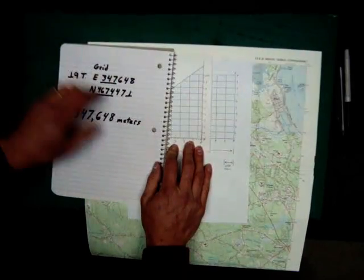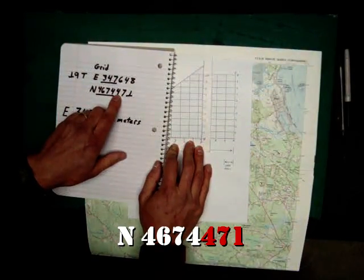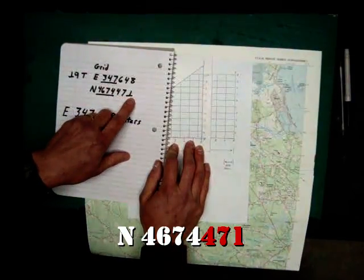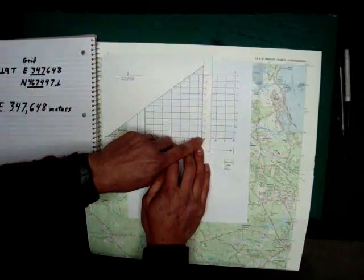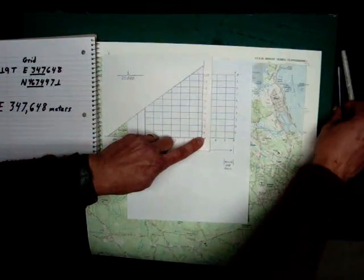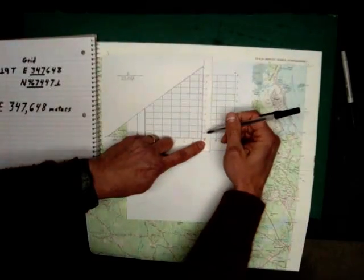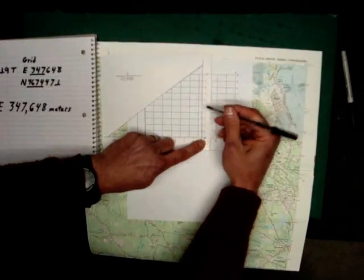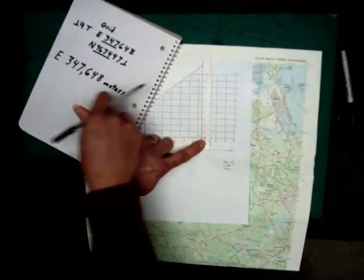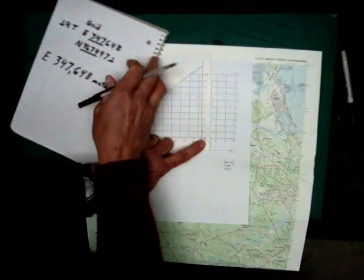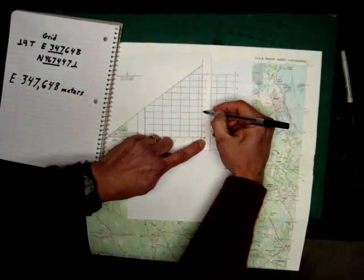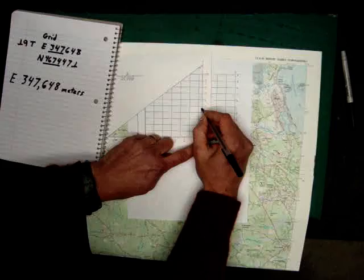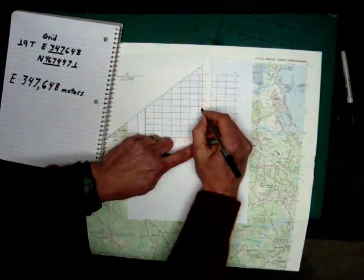So now we're ready to plot our northern line, 471 meters. So you do the same thing. You come up here, I grab my pen: 100, 100, 100, 200, 300, 400. And the number, our number is 471, so it's in between there, so it's right about there, and you mark it.